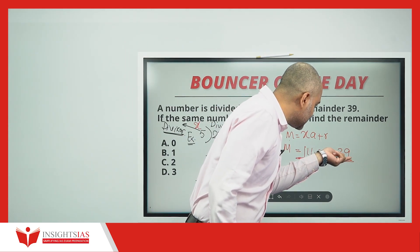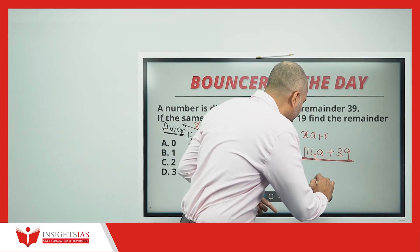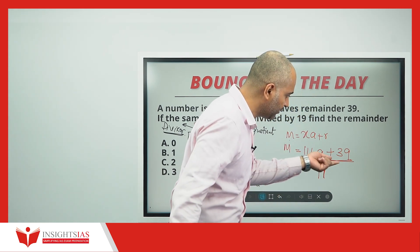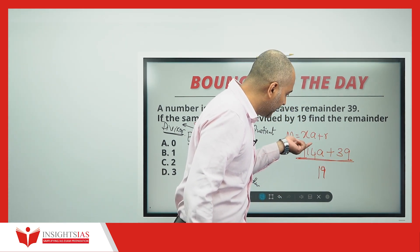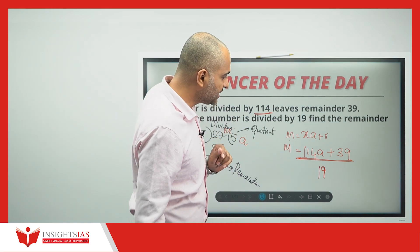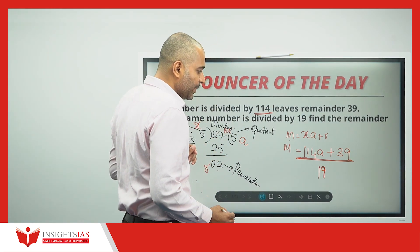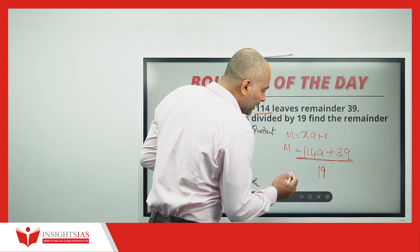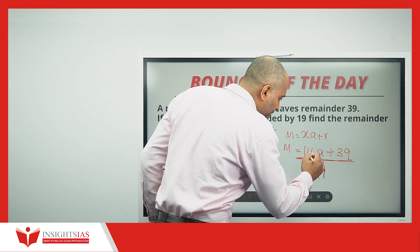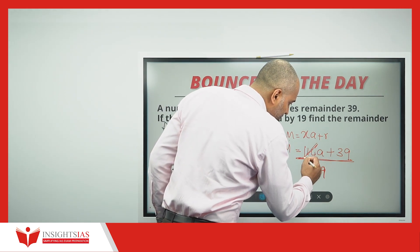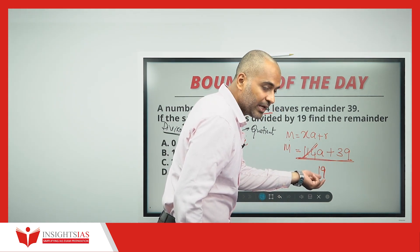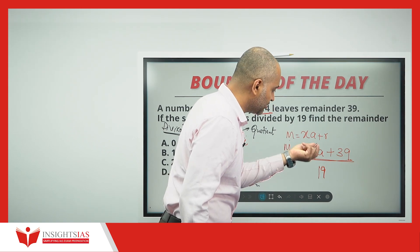Now, when this number is divided by 19, what is the remainder? In this kind of case, look whether 114 is divisible by 19. Yes, it is completely divisible — 114 is divisible by 19 exactly 6 times.